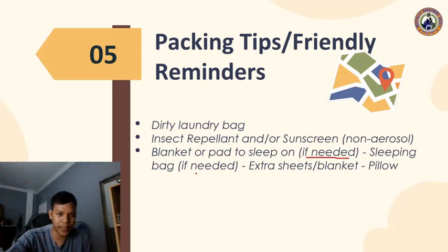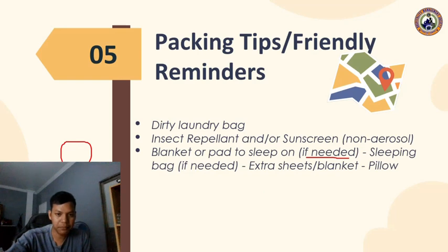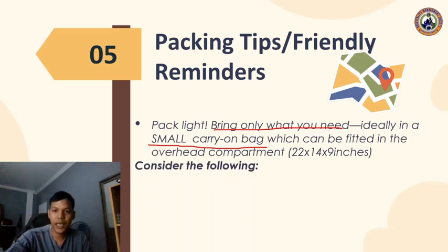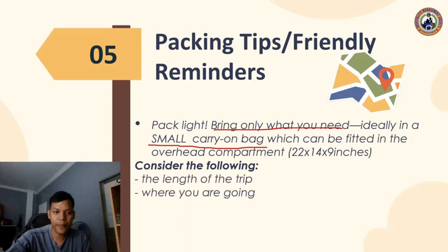Also bring a dirty laundry bag to separate soiled clothes from clean ones, insect repellent or sunscreen (non-aerosol), a blanket or pad if needed, and a sleeping bag if needed. Pack light — bring only what you need, ideally in a small carry-on bag that fits in overhead compartments, ideally 22 by 14 by 9 inches. Consider the length of the trip, where you are going, and how you are traveling.